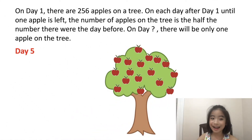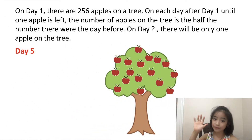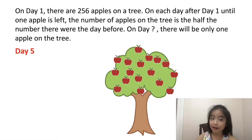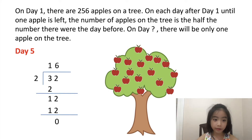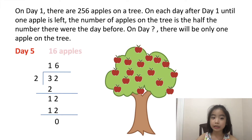Now let's figure out how many apples there are on day five. We know that on day four there are 32 apples. So the number of apples is half the number of apples on day four. Half of 32 is 16. So on day five, there are 16 apples.